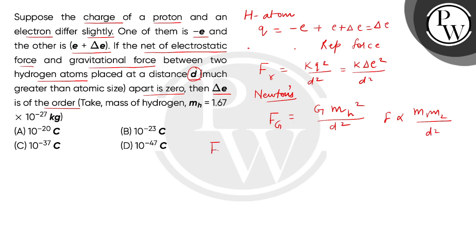Now, given to us that repulsive force and gravitational force net force is zero. So we will put values here. K del E squared divided by D squared minus G mh squared divided by D squared equals to zero. So here we will get del E squared is equal to G mh squared divided by K.